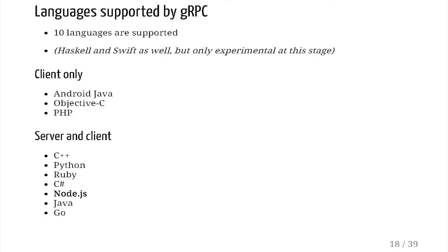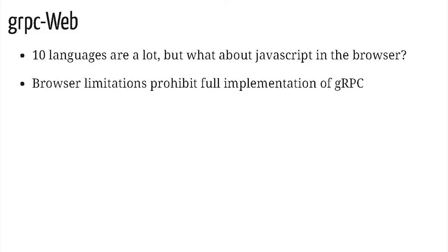Currently, gRPC supports 10 languages out of the box. There are currently experimental projects for Haskell and Swift, but they're client-only languages — meaning you can only do gRPC calls from them. Client-only languages include Android Java, Objective-C, or PHP. Server and client languages — where you can create both — include C++, Python, Ruby, and Node.js, which I've highlighted there. But what about browser JavaScript? We've got Node.js, but if you want to call it directly from the browser, it's not possible at the moment.